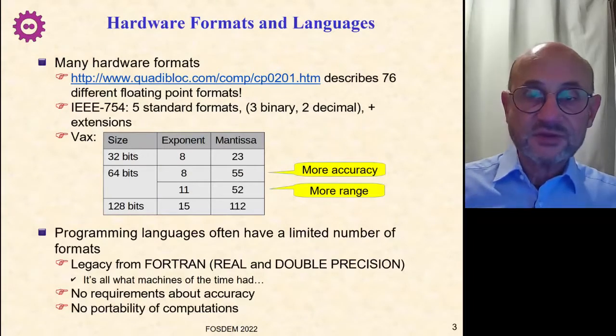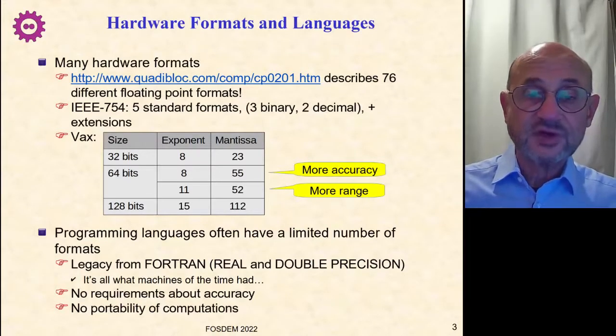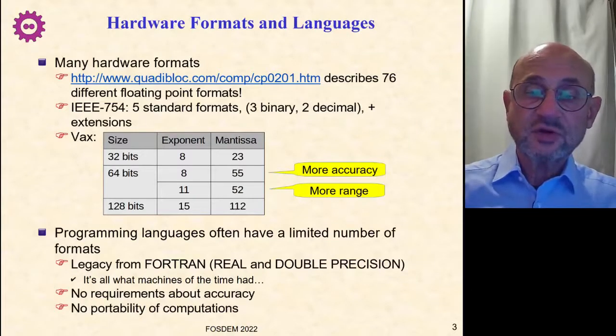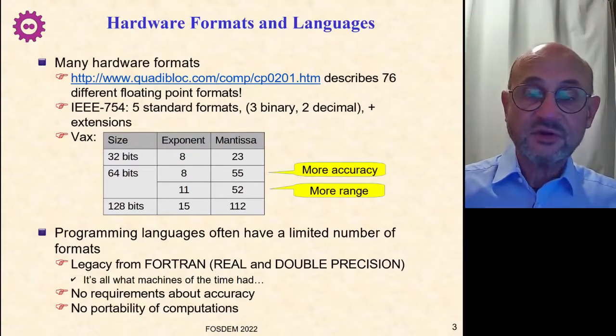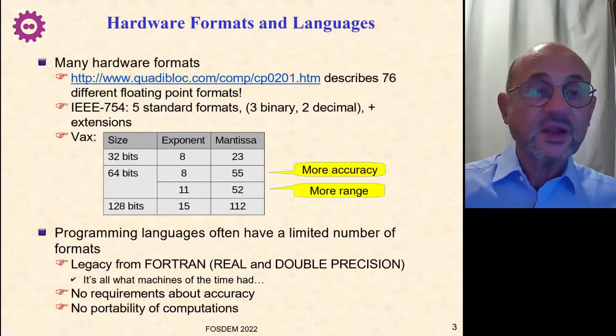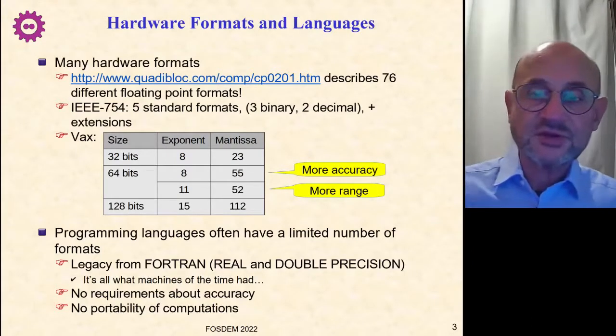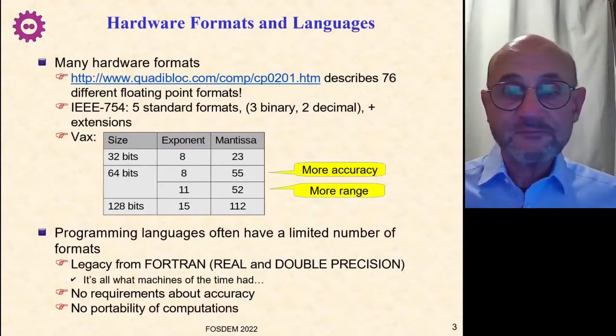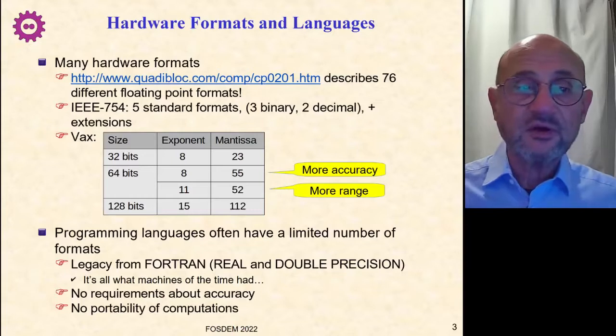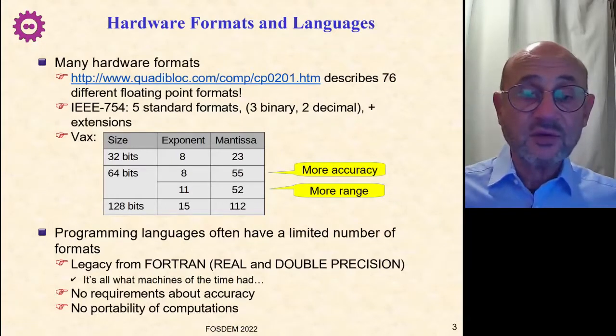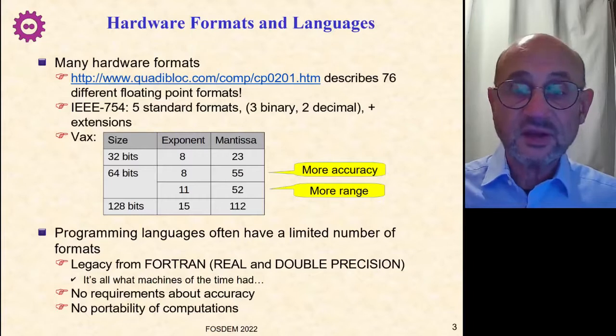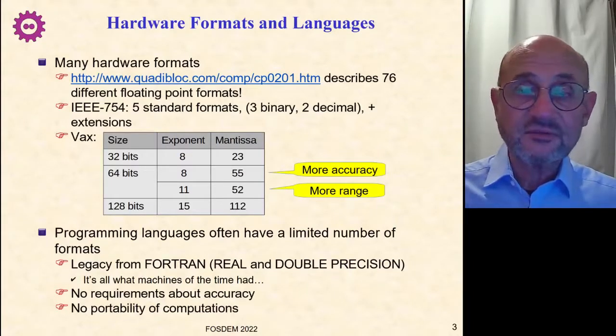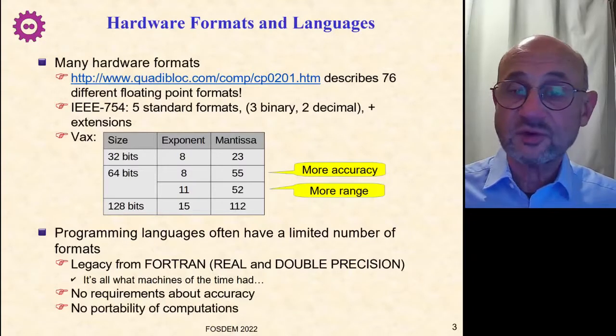How did programming languages address this issue? Well, for a long time they followed the legacy of Fortran. Fortran had only two definitions, real and double precision, because that was what was available on the computer where Fortran was designed. Then some programming languages added some more formats, but it's basically saying I want a big or a small real number without any indication about the kind of accuracy you needed. And of course, real didn't mean the same thing from a computer to another one, there was no portability.